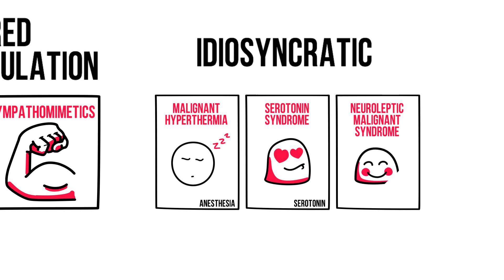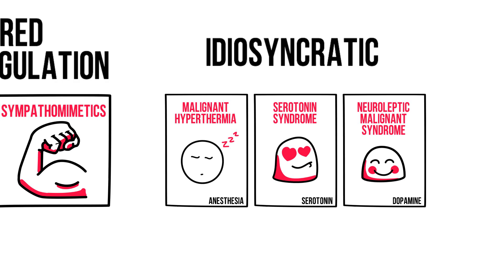Neuroleptic malignant syndrome is a life-threatening condition associated with neuroleptics like haloperidol and risperidone, or the withdrawal of dopamine agents — i.e., anti-Parkinson agents. The pathophysiology is unknown, but probably has something to do with the blockage of dopamine. It develops over a few days after exposure. It is considered a medical emergency and most patients require ICU admission. Stop the neuroleptic, start cooling and rehydration, and consider dantrolene or bromocriptine.